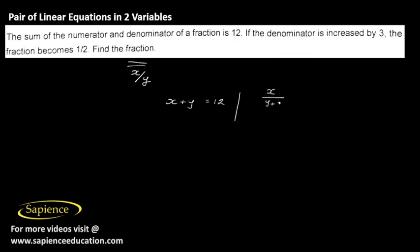That is, keeping the numerator as it is, if we add 3 to the denominator, then the fraction is 1/2. This can be rewritten as 2x = y + 3, or 2x - y = 3.